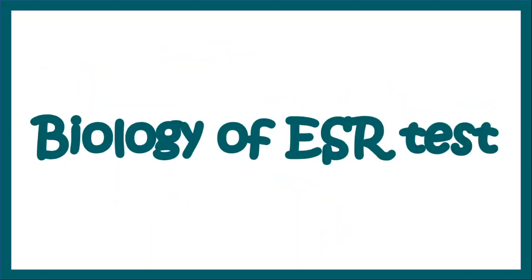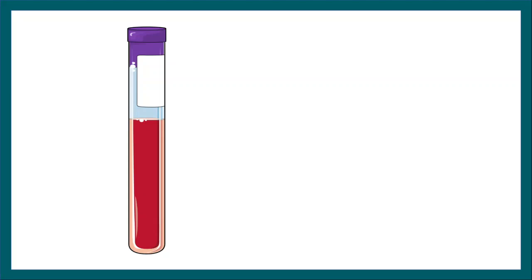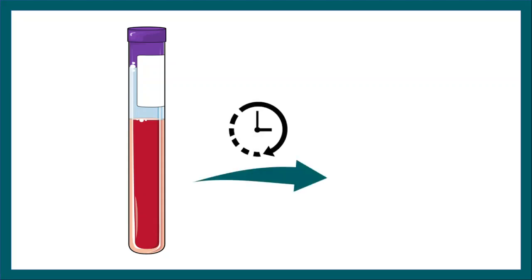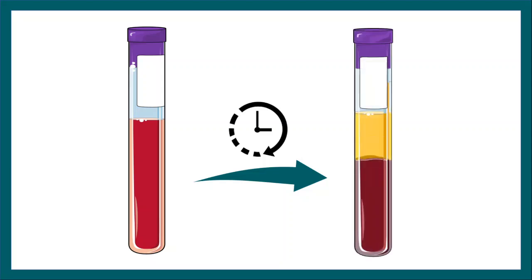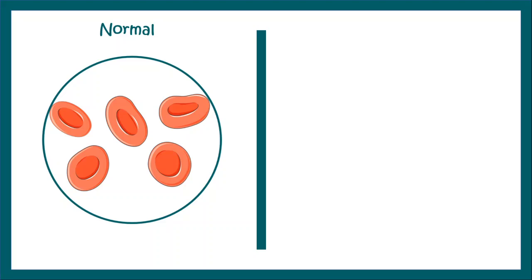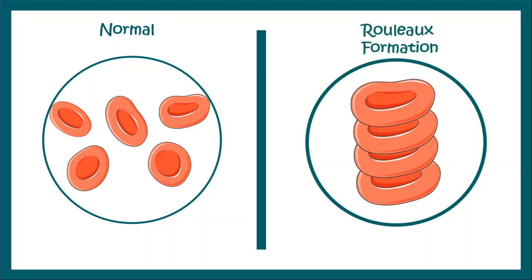Now let us understand what biology plays behind the ESR test. If you take a tube with anticoagulant added and put some blood sample into it and wait for some time, you will see that the plasma will get separated at the top and there will be RBC sediments at the bottom. This occurs because of something known as Rouleau formation. Normally RBCs are present in the blood in a free-floating manner, but due to the influence of certain factors known as pro-sedimentary factors, which are mostly fibrinogens and immunoglobulins, RBCs undergo Rouleau formation, which is nothing but a coin-stacking arrangement of the RBCs.